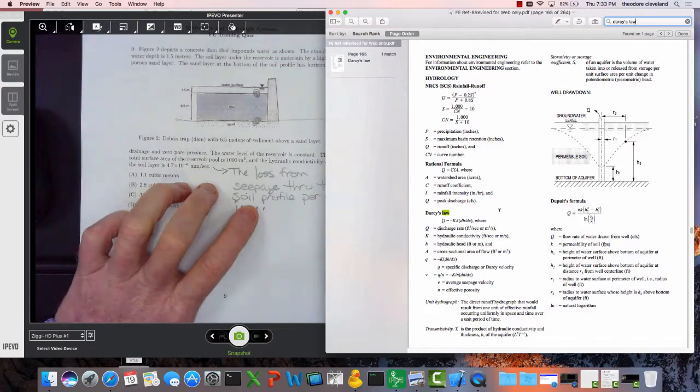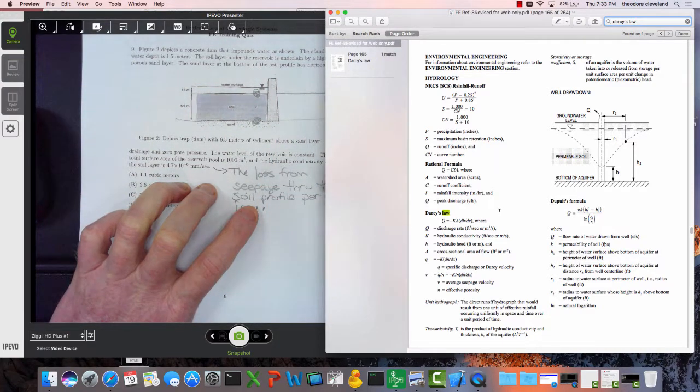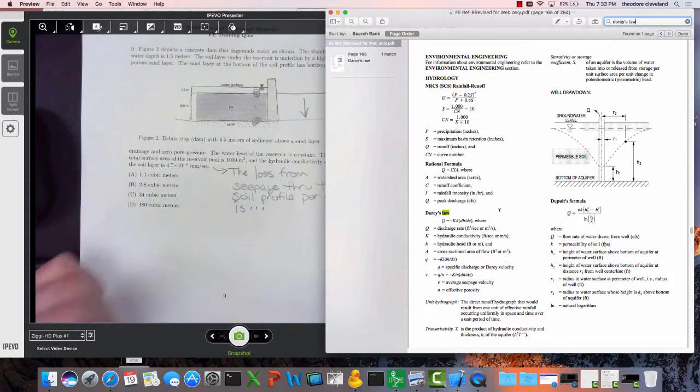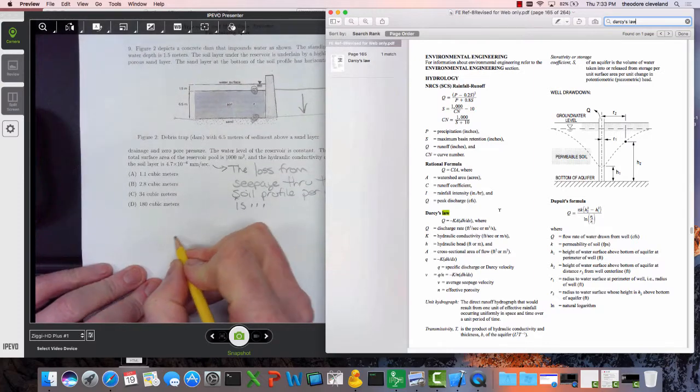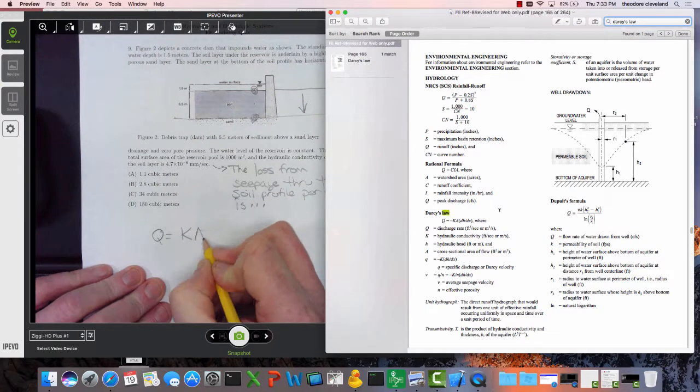Okay, so the head there is zero. The head here at this end is the distance 6.5 meters plus the height of water above the filter layer which is 1.5 meters. So 6.5 plus 1.5 is 8 meters of head, and we're going to apply Darcy's law in that direction. So now we have Q equals K times A times 8 meters minus 0 meters - that's the high head minus the low head.